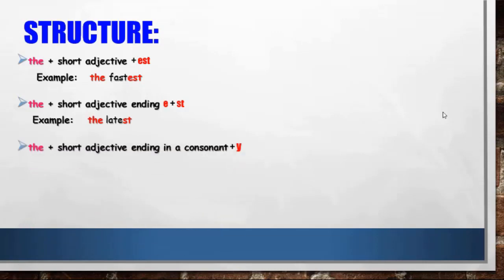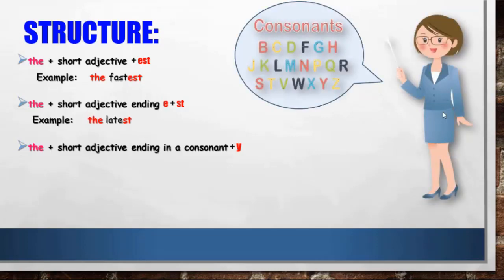Number three: if the short adjective ends with a consonant before 'y' — and consonants are letters like B, C, M, N — you cross out the 'y' and write '-iest'. Like this example: 'the heaviest'.